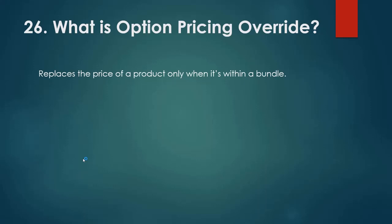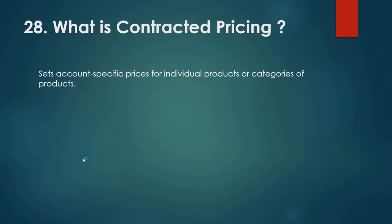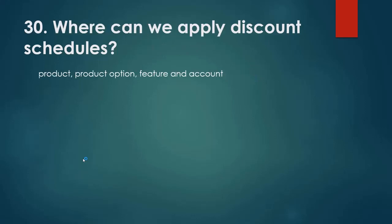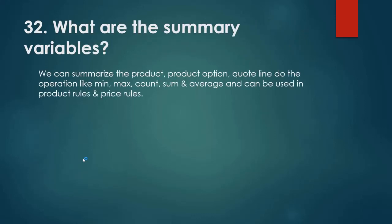What is option pricing override? Option pricing override replaces the price of a product only when it is within a bundle. What is cost plus markup pricing? Cost plus markup pricing allows sales reps to add a value on top of the product's cost. What are contracted prices? Contracted pricing sets account-specific prices for individual products or categories of products. How many types of discount schedules are there? There are two types: slab and range. Where can we apply discount schedules? We can apply discount schedules on product, product options, features, and account. If you apply a discount schedule at the feature level, all the options inside the feature will get the discount.